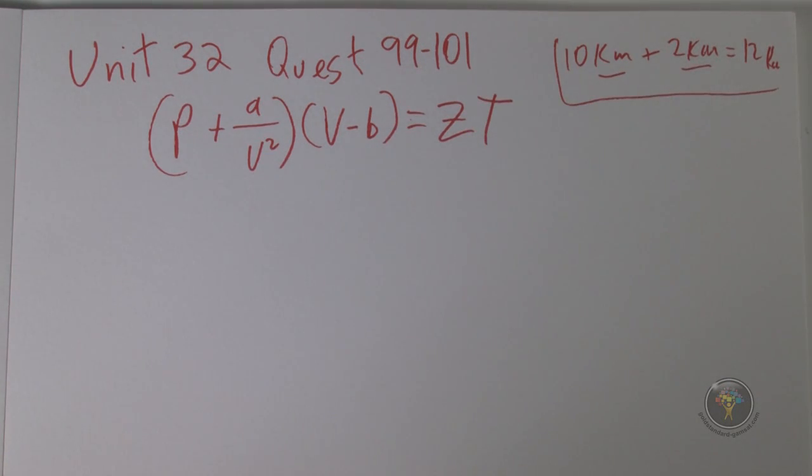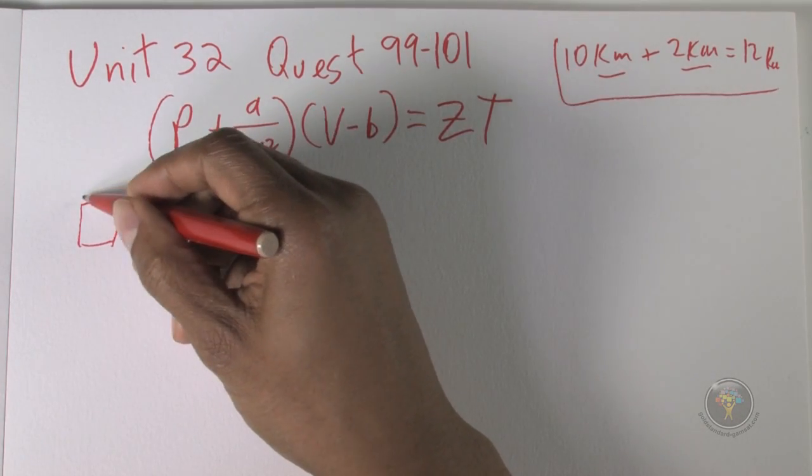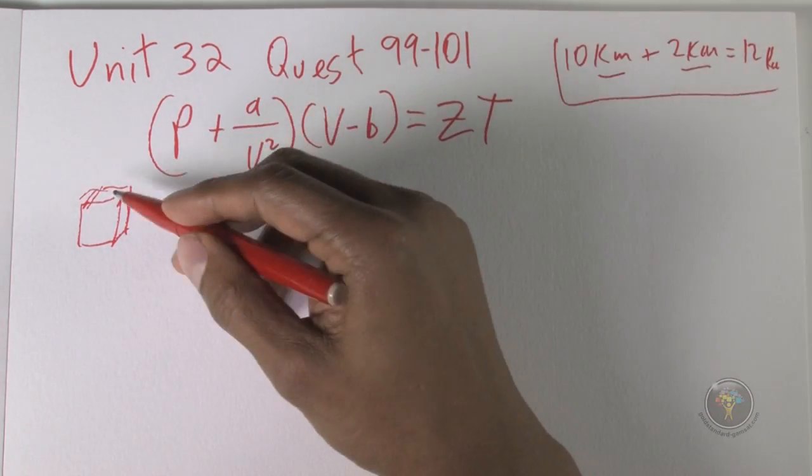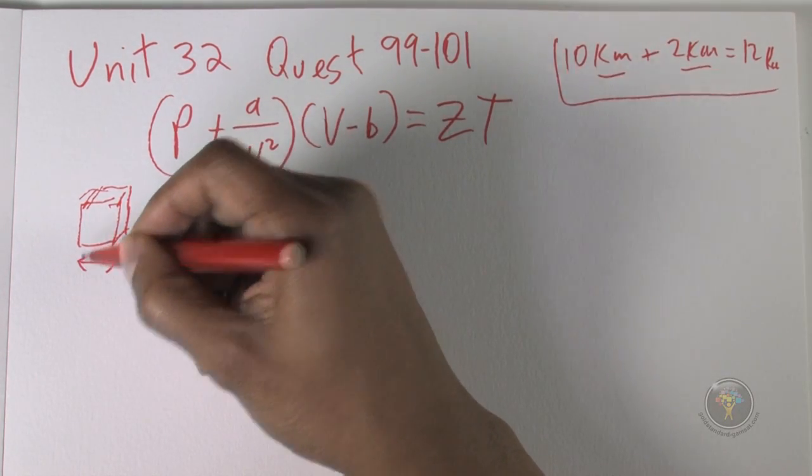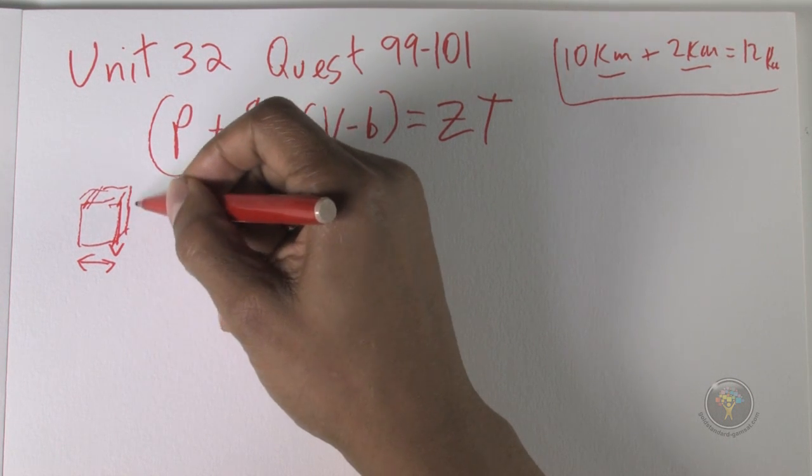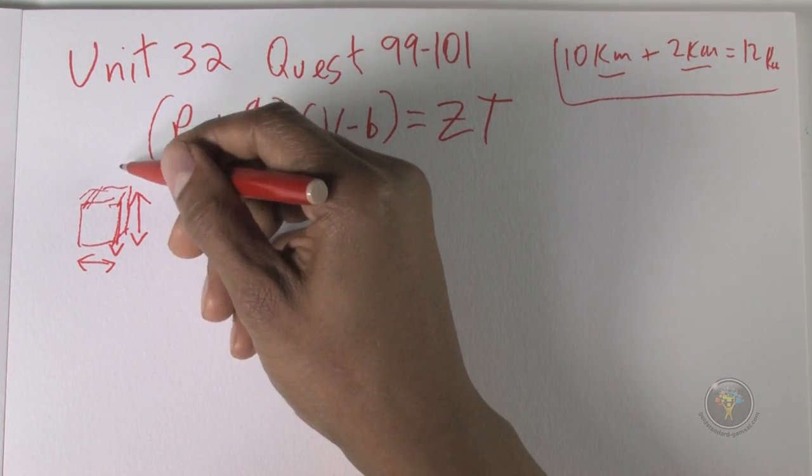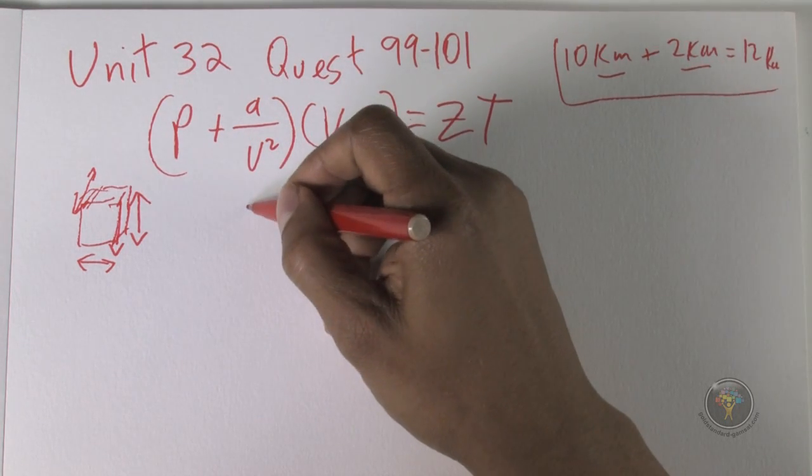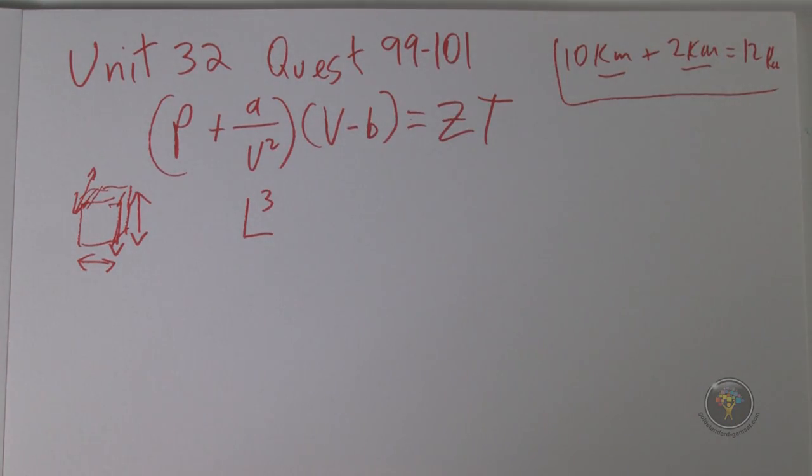What are the dimensions of volume? I can't draw in three dimensions at all. The point is that volume is length times length times length, so it's L cubed. So the dimensions of volume is L cubed, and that must be the dimensions for B. So 99 is just to get you warmed up, and then 100 and 101 just need a little bit more manipulation.